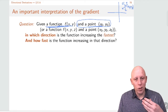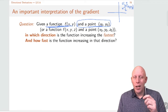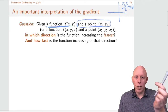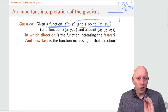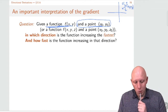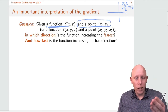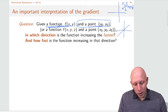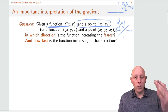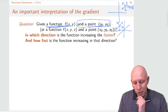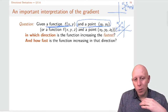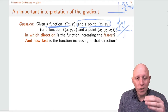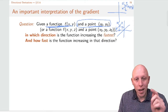So that's what we're going to ask — we're at this point and there's some way that we can walk that's going to make the function increase as fast as possible. We can ask this question in two dimensions or in three dimensions: which way should we walk to make the function value increase the fastest? But not only which way should we walk, but how fast is the function increasing in that direction?